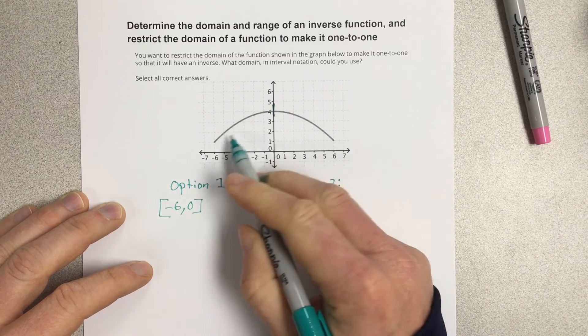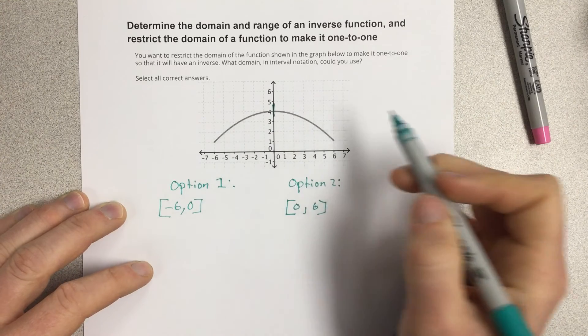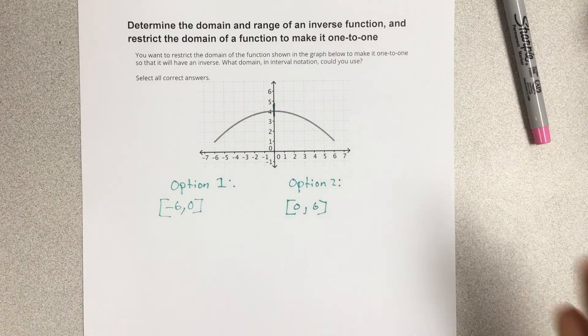But it's got to be one of these. I can't have a domain negative 6 to 6 because this function would not pass the horizontal line test, which means it isn't one-to-one.